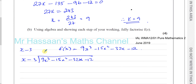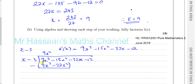x into 9x cubed equals 9x squared. Multiply both terms of the divisor by 9x squared: you get 9x cubed minus 27x squared. Subtract these two lines: that gives 0, and minus 15 plus 27, which is 12, giving 12x squared. Bring down plus 12x and the minus 32x.